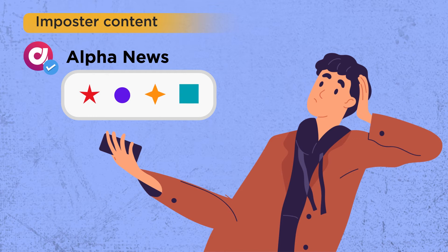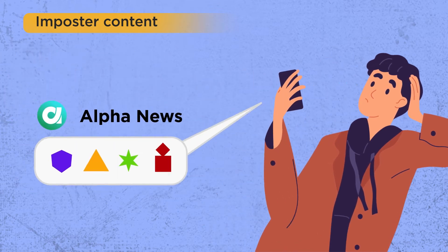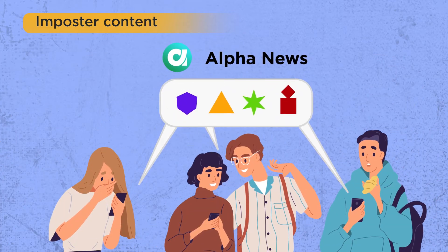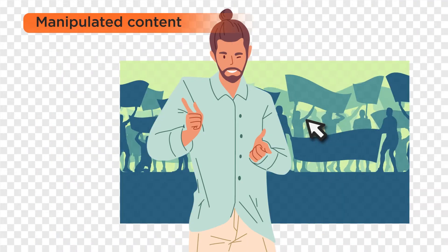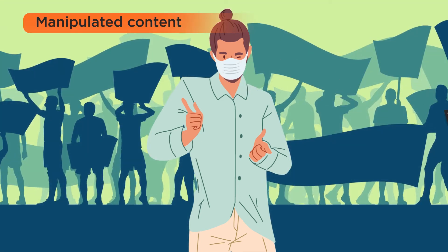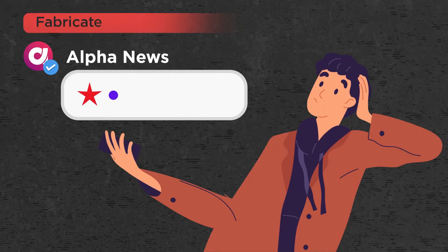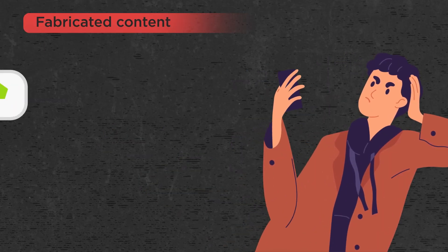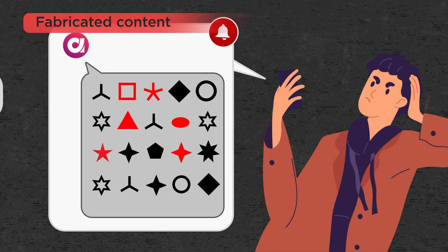On the other hand, imposter content is false or misleading content which makes use of well-known organizations' logos, including established news brands, or established figures and journalists. Manipulated content is genuine content that is altered or manipulated and occurs often with photos and videos. Fabricated content can either be entirely in text or visual in nature and is 100% false, hence this causes the highest level of harm.